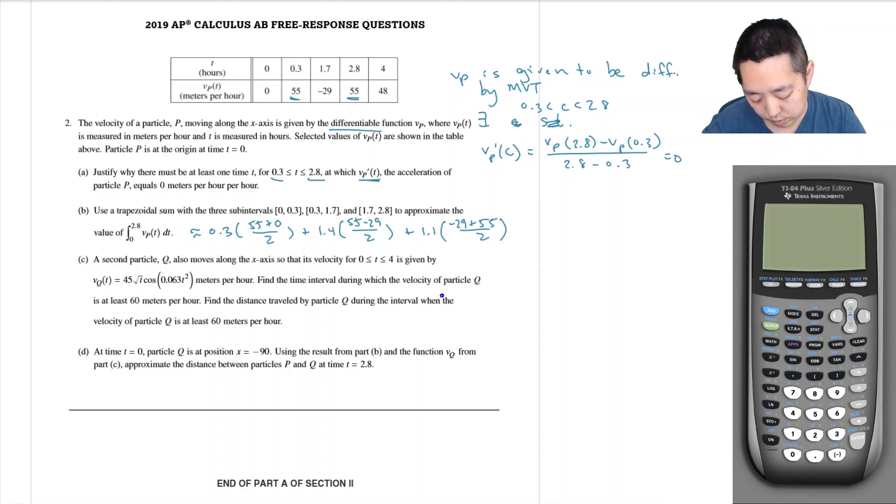0.3 times 55 divided by 2, plus 1.4 times 55 minus 29 divided by 2, plus 1.1 times 55 minus 29 divided by 2, and that is 40.75. Now this is displacement because it's the area under velocity, and so that's in meters.